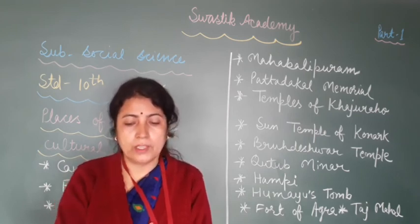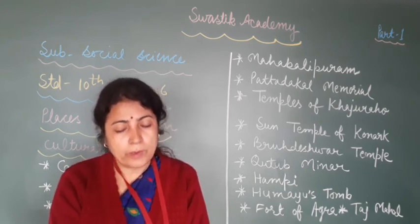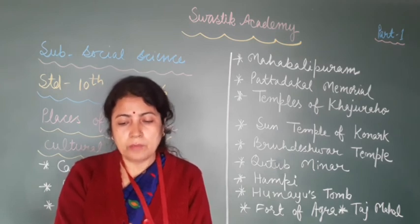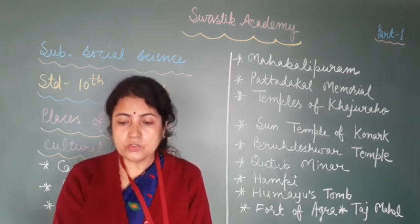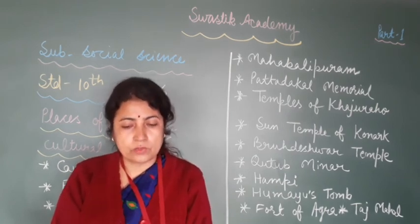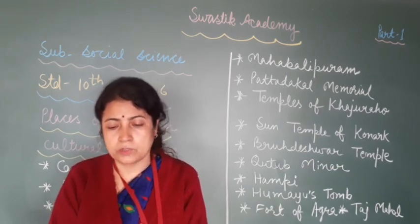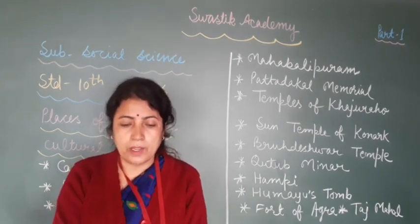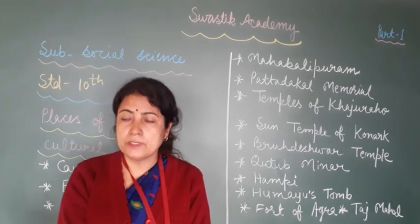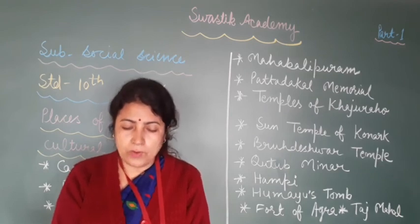The Tomb of Humayun at Delhi is the best specimen of Mughal architecture. After the death of Humayun, this tomb was made by his queen Hamida Banu Begum. It was built in the Iranian style of art using red and white stone. The Agra Fort is known as the Red Fort, built by Akbar in 1565. We can see the reflection of Hindu and Iranian style of art in it.